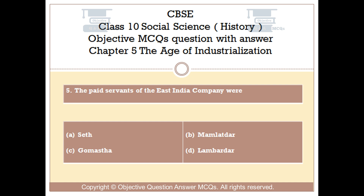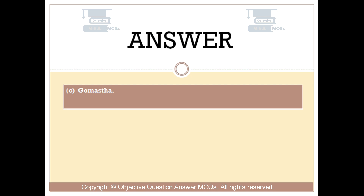Question number 5. The paid servants of the East India Company were: Option B, Mamladar; Option C, Gamastha; Option D, Lambardar. The right answer is Option C: Gamastha.